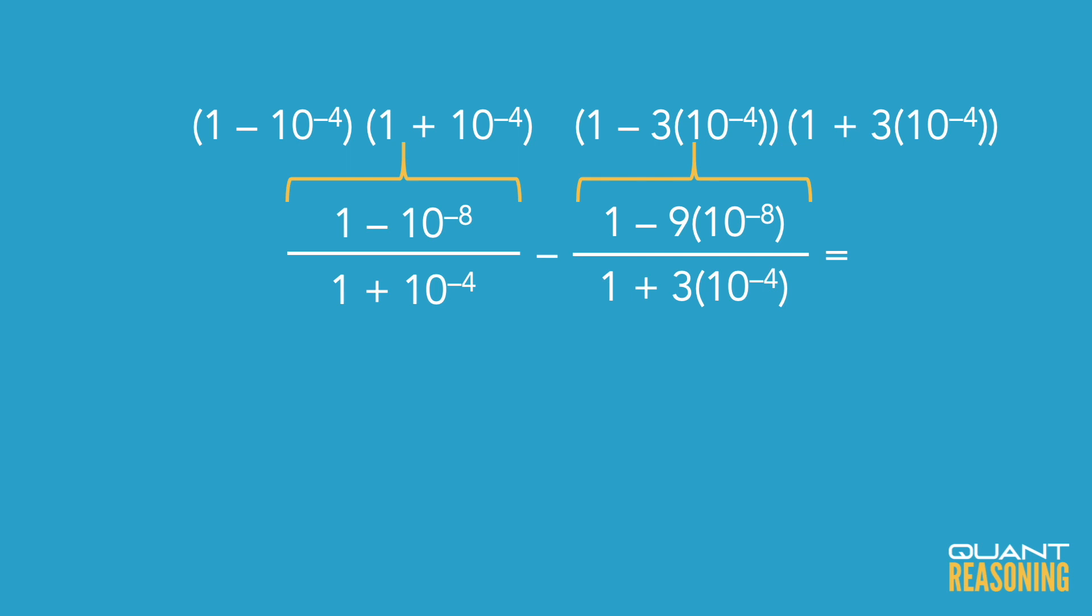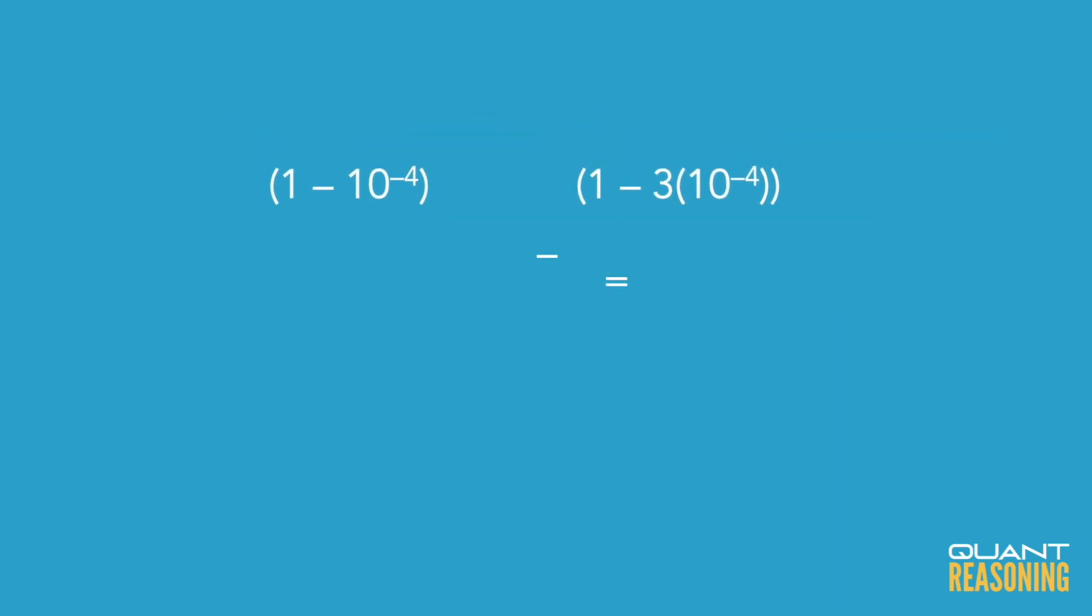And the reason we were motivated to do all of that is that now we can reduce the denominators with their respective numerators. And what we'll end up with for the first term is 1 minus 10 to the power of negative 4, and in the second term we'll have 1 minus 3 times 10 to the power of negative 4.